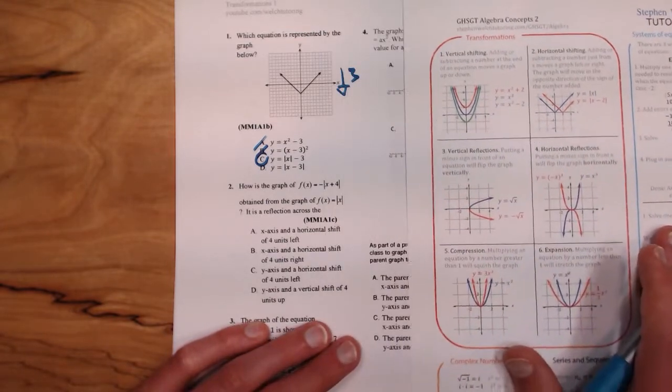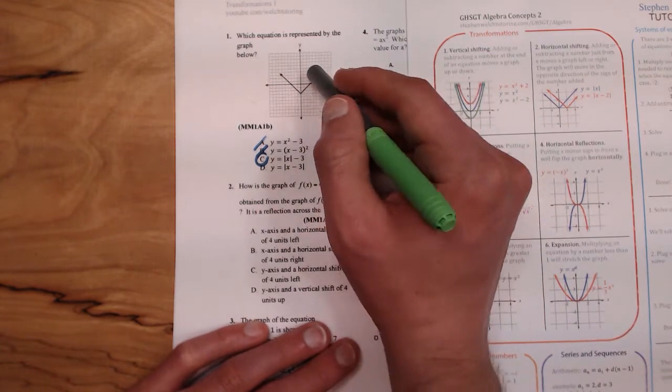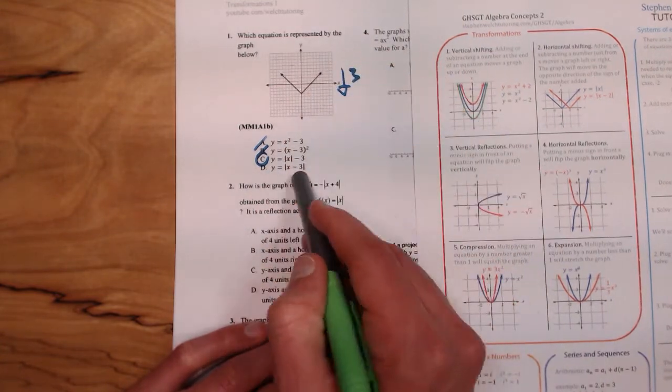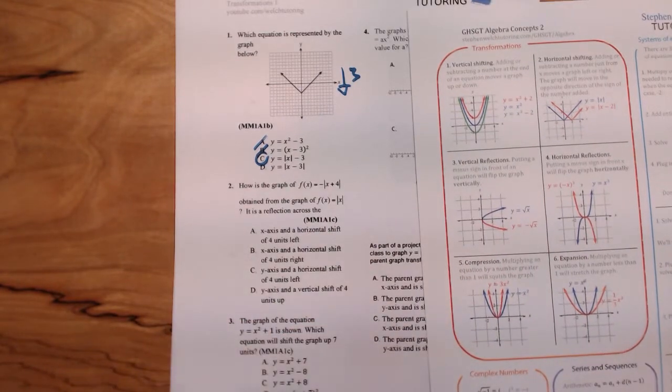Notice over here, if it had been subtracted from the inside of the equation like this, it would have been a horizontal shift and our shape would have been to the left or to the right. In this case it would have been to the right. So that one is C.